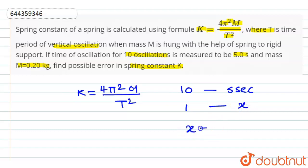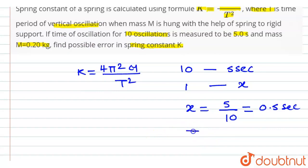So here x will be equal to 5 divided by 10 which will be equal to 0.5 seconds. So here the time required to complete 1 oscillation is 0.5 seconds, that is the time period of oscillation T is 0.5 seconds.